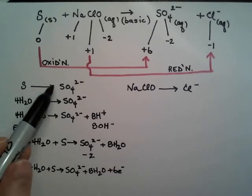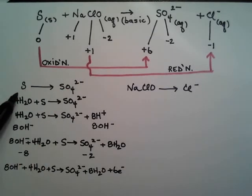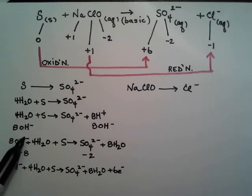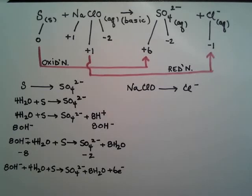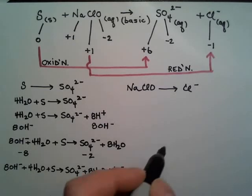I need six electrons on this side. And so my oxidation involves the loss of six according to this half reaction. Six electrons are needed to balance the charge. Six electrons on the product side. We'll halt this one here. We'll go over to the other side.